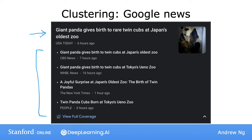Maybe from the headlines alone, you can start to guess what clustering might be doing. Notice that the word panda appears in multiple articles, and the word twin also appears in all five articles, and the word zoo also appears in all of these articles. So the clustering algorithm is finding articles — out of all the hundreds of thousands of news articles on the internet that day — finding the articles that mention similar words and grouping them into clusters.